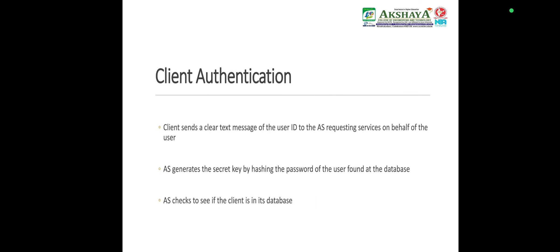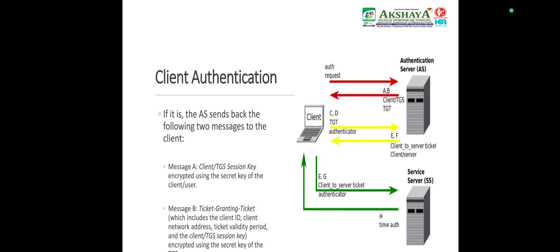Client authentication: The client sends a clear text message of the user's ID to the AS, requesting service on behalf of the user. The AS generates a secret key by hashing the password of the user found in the database, and checks to see if the client is in the database. If it is, the AS sends back two messages to the client. Message A: the Client-TGS session key encrypted using the secret key of the client. Message B: the Ticket Granting Ticket, which includes the client ID,